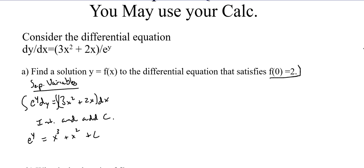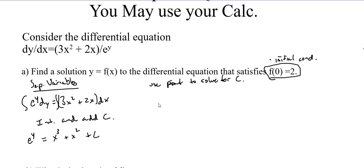From here, we're going to take our initial condition — because they give us this initial condition — and we're going to use that to solve for C. We're going to plug in 0 for x and 2 for y, so we have e squared equals 0 plus 0 plus C. So we know C equals e squared.